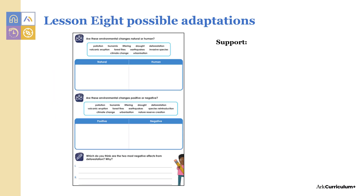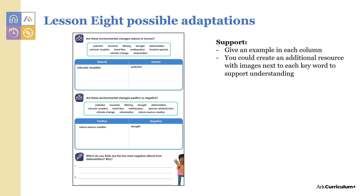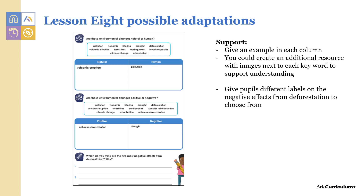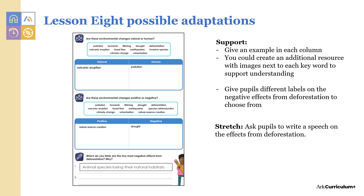To support pupils undertaking activities in lesson eight, you could give an example in each column for the first activity, create an additional resource with images next to each keyword to support understanding, or give pupils different labels on the negative effects of deforestation to choose from. Stretch pupils by asking them to write a speech on the effects of deforestation.